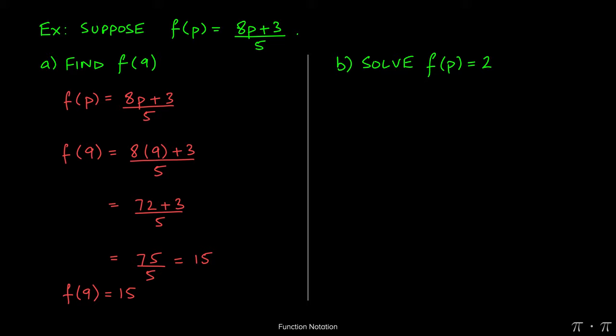The question on the right is asking us to solve an equation where f of p is equal to 2. This is different because here, instead of being given the value of the independent variable, we're actually told what the output of the function is and we're being asked to back into what the input would have been.